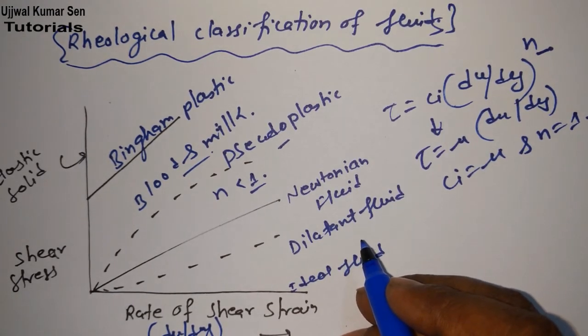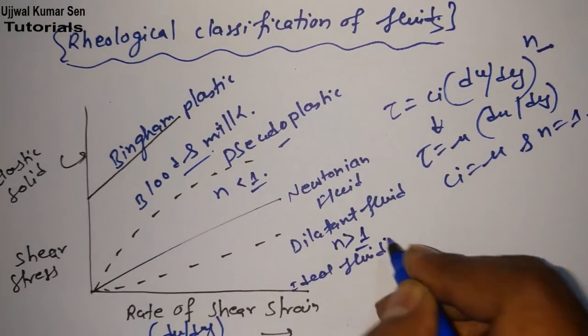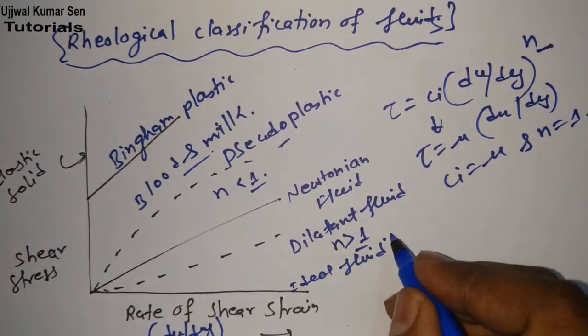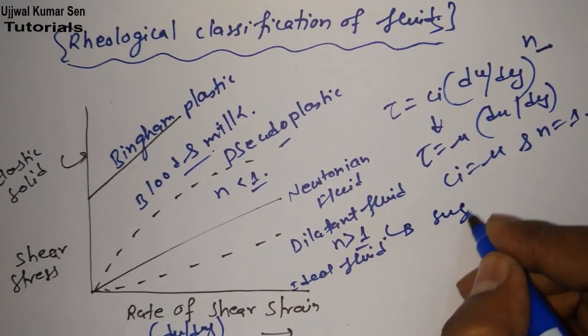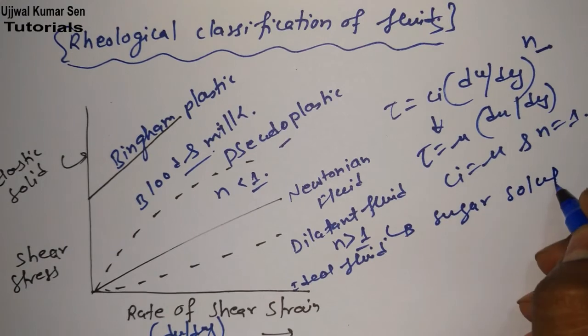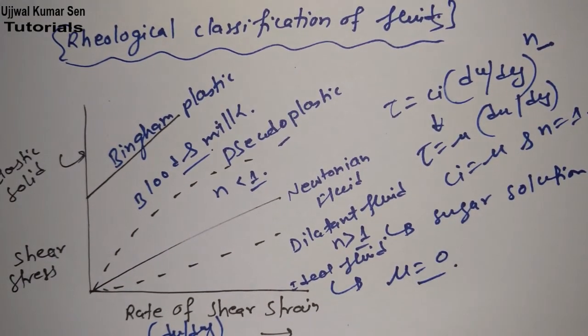Now let's talk about dilatant fluid. If n > 1, then such type of fluid is known as dilatant fluid. The example: sugar solution.